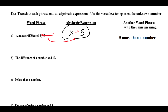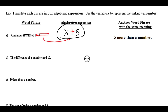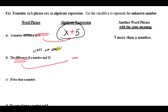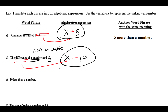Let's look at another one: 'the difference of a number and 10.' The phrase 'the difference of' represents subtraction, and it lists the numbers in order — so we take a number (x) and 10, giving us x − 10. This is different from 10 − x, which would not be the same expression. We need to watch out for that order.